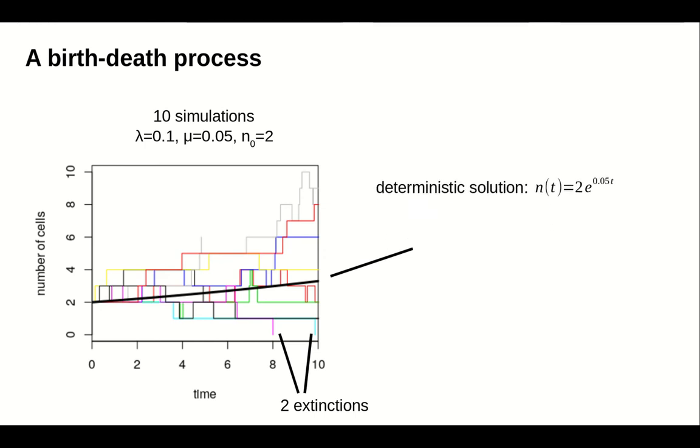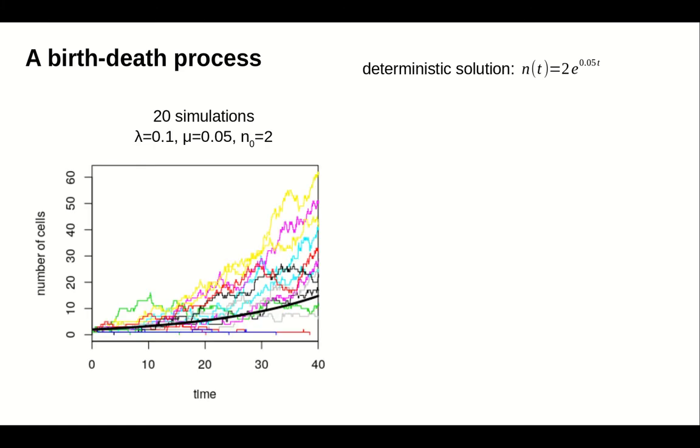To further illustrate the model, we quadruple the simulation length and double the number of simulations to 20. It's hard to tell from the picture, but in 8 of the 20 simulations, the cell population went extinct.